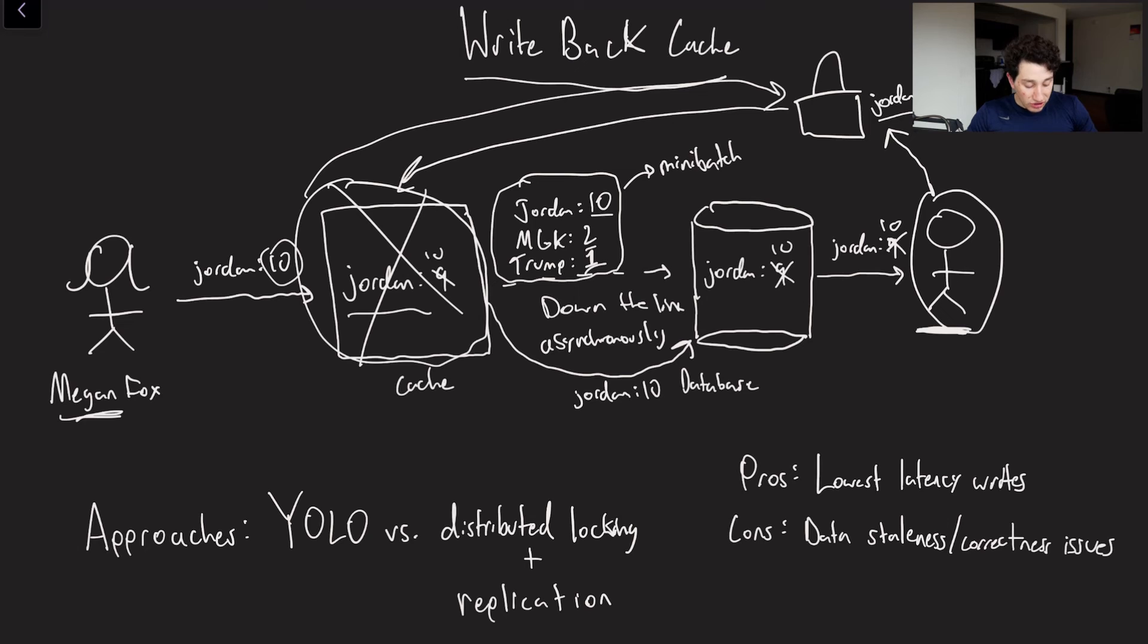Of course, in combination, using something like distributed locking and cache replication does solve our problem here. But not only does it add a ton of complexity to our system, it also adds a ton of latency and in many ways kind of just defeats the point of using a write-back cache.